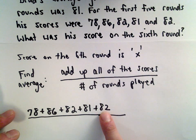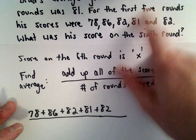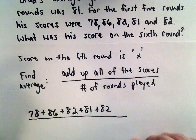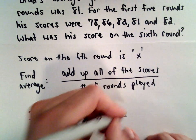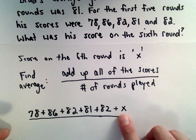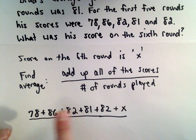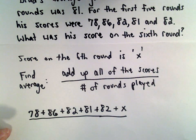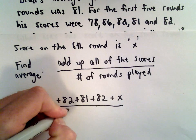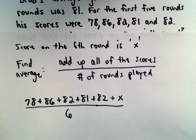That was only for the first five rounds. We know after six rounds his average was 81. There were six rounds total, so we also have to add this unknown one, X. That's accounting for his six rounds, so we're going to divide that by six, because that was the number of rounds that he played.